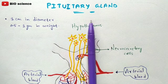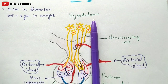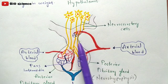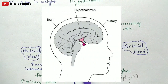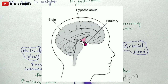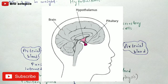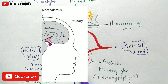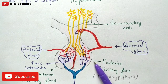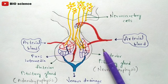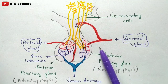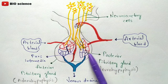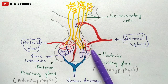Coming to the anatomy, this will be the structure of the pituitary gland. It is present at the basement region of the brain — as you can see in the picture, the pituitary gland is clearly visible at the basement region of the brain. This pituitary gland contains two lobes: the anterior lobe and the posterior lobe.